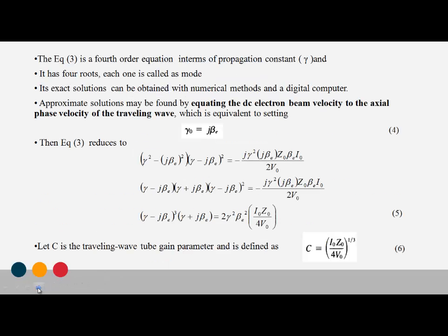The resulting equation is a fourth-order equation in terms of the propagation constant gamma. A fourth-order equation has four roots, and each root is called a mode. The exact solution for this fourth-order equation requires numerical methods using digital computers.